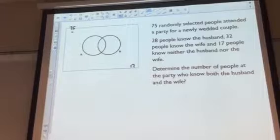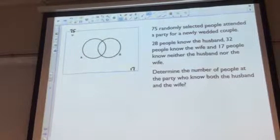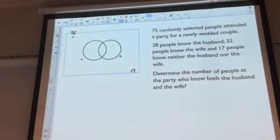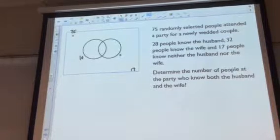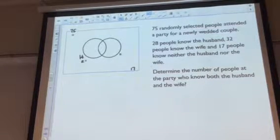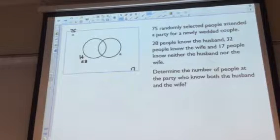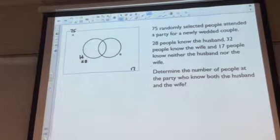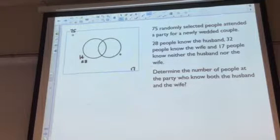Where do we go now? So here's the husband's circle. We know there's 28 people in that circle somewhere. Do we know where? Not specifically. We'd be guessing if we were trying to figure out how many were in the left-hand crescent and the right-hand crescent. I don't think guessing is a good idea, so we're going to be a little bit more methodical.